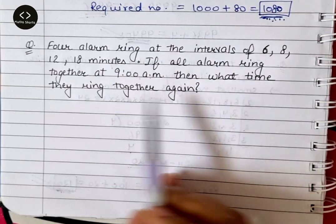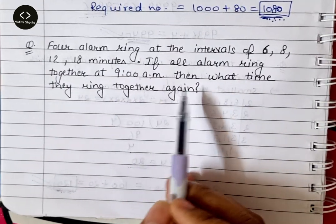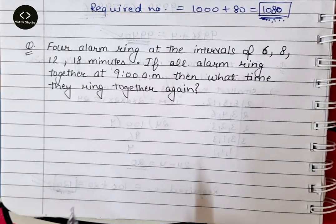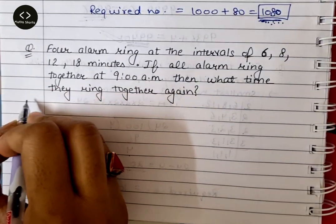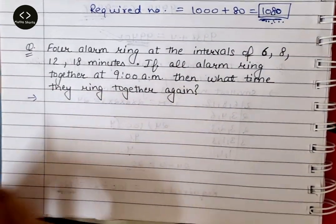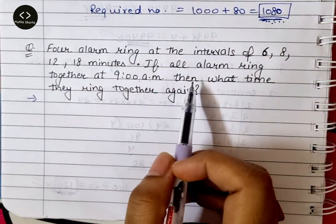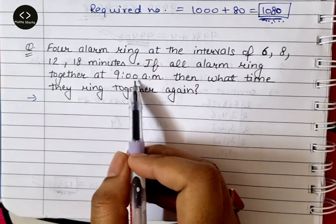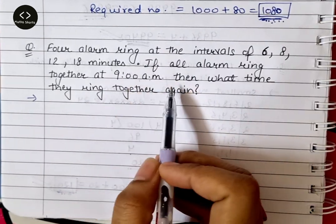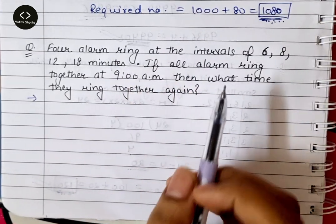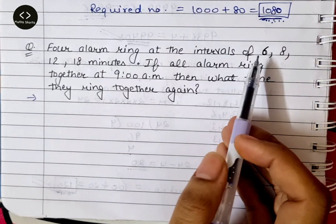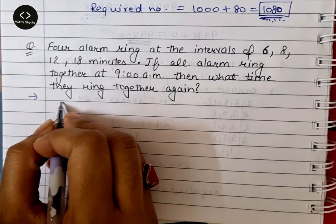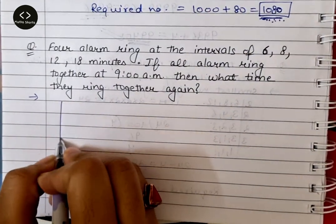तो इस case में हम क्या करते हैं — ऐसे अगर question आए कि इतने time पर एक बार ring किया, then again कब ring करेगा alarm एक साथ — तो 6, 8, 12 and 18 का हम LCM निकाल लेते हैं।